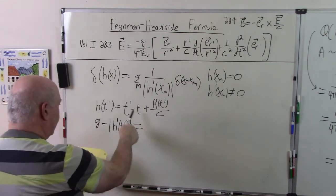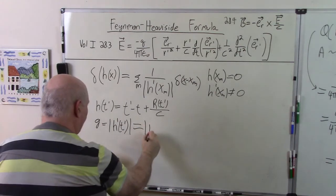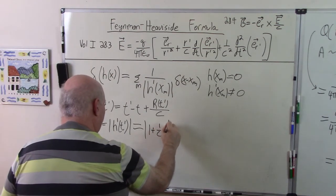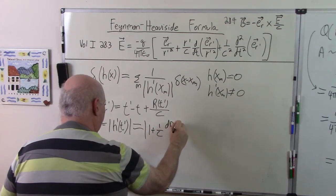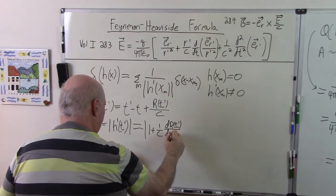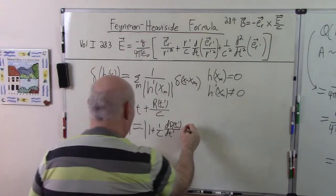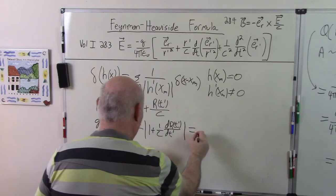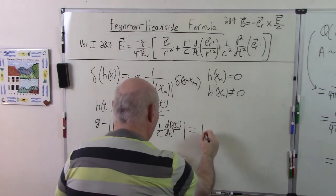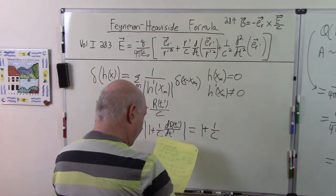And this is equal to, when we take the derivative, we get the absolute value. The derivative with respect to time becomes 1 plus 1/c, dr of t'/dt'. Absolute value. I don't think we really need the absolute value sign there. But this is equal to 1 plus 1/c.